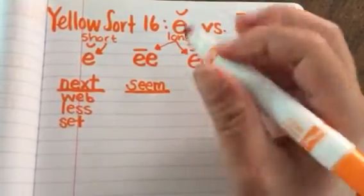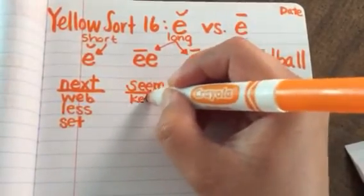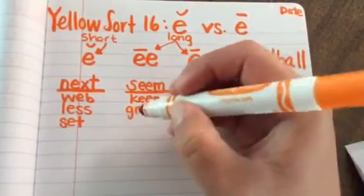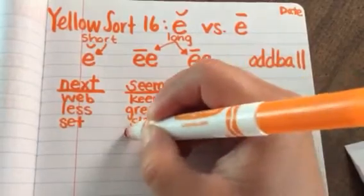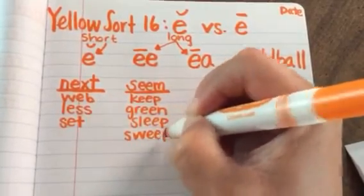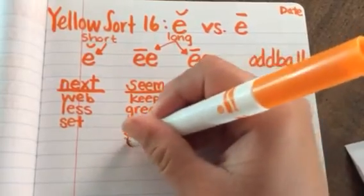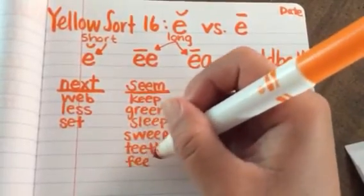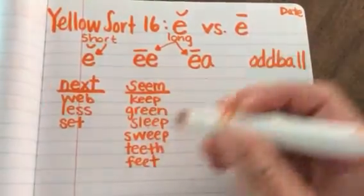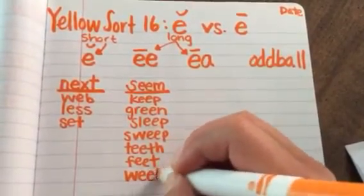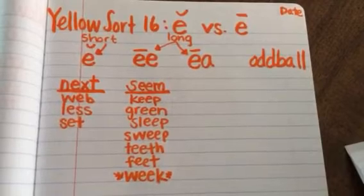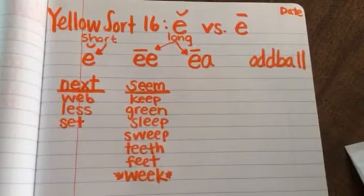The other words are keep, green, sleep, sweep, teeth, feet, and week. This week means there are seven days in a week, it's the length of time. We will see the other week meaning not strong in the other category.